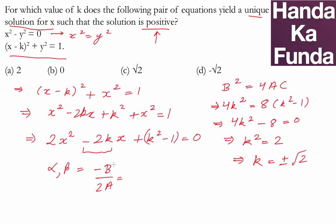So, what will they be in this situation? They will be -b or 2k upon 2a or by 4 or the two roots will be k/2. Now, if we want the two roots which are equal, the unique solution to be positive,